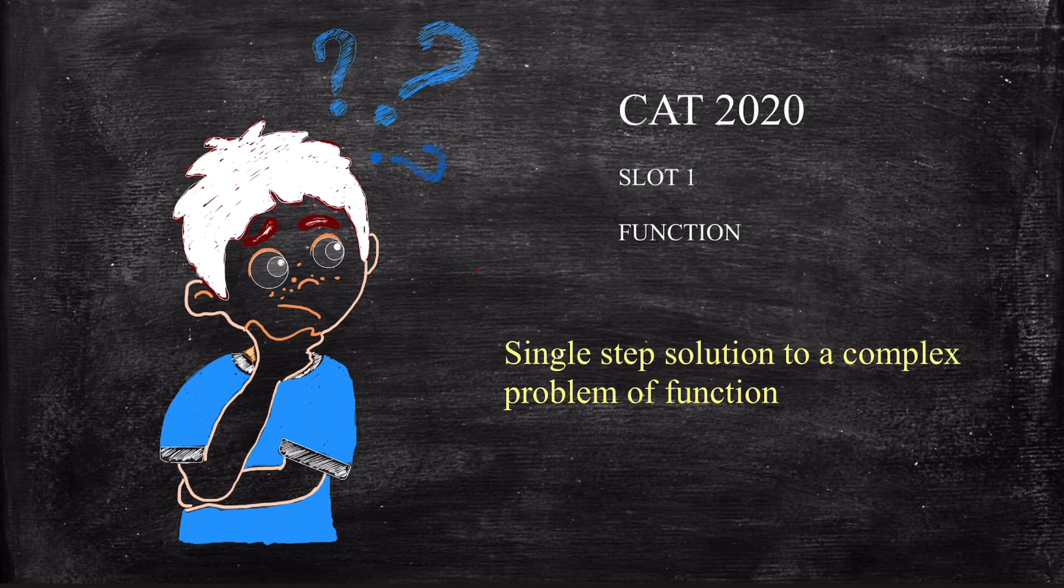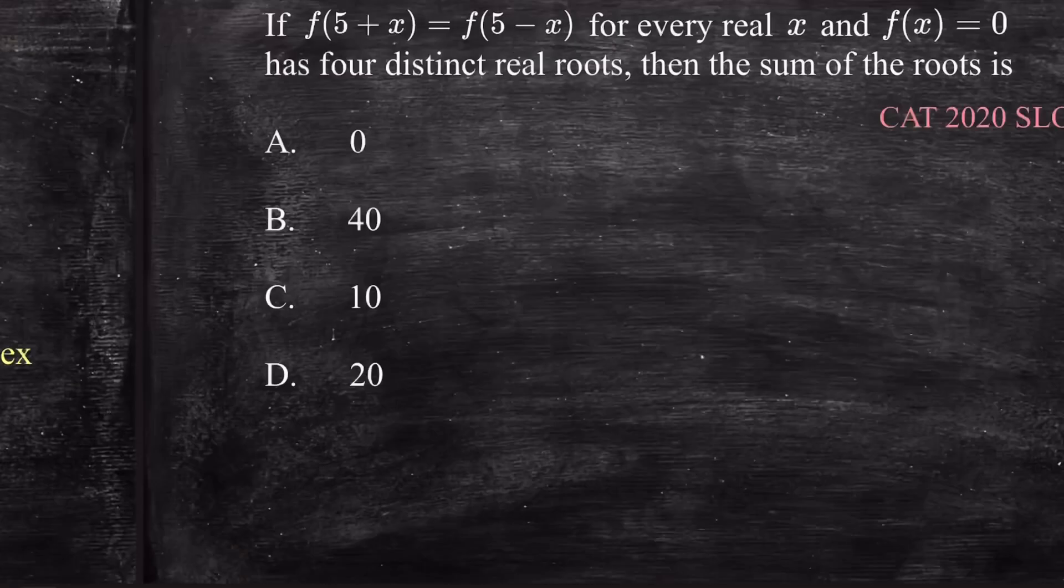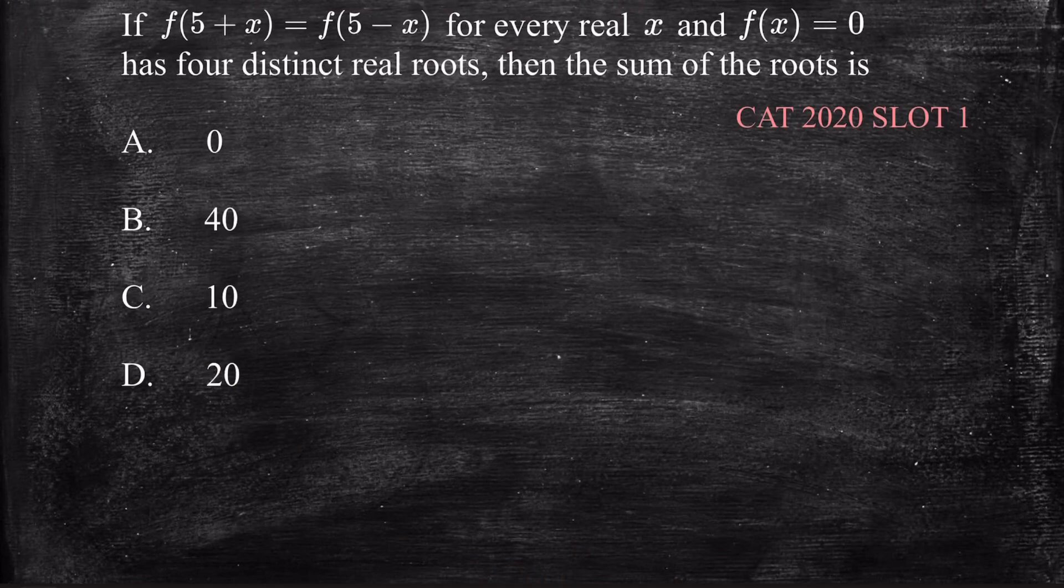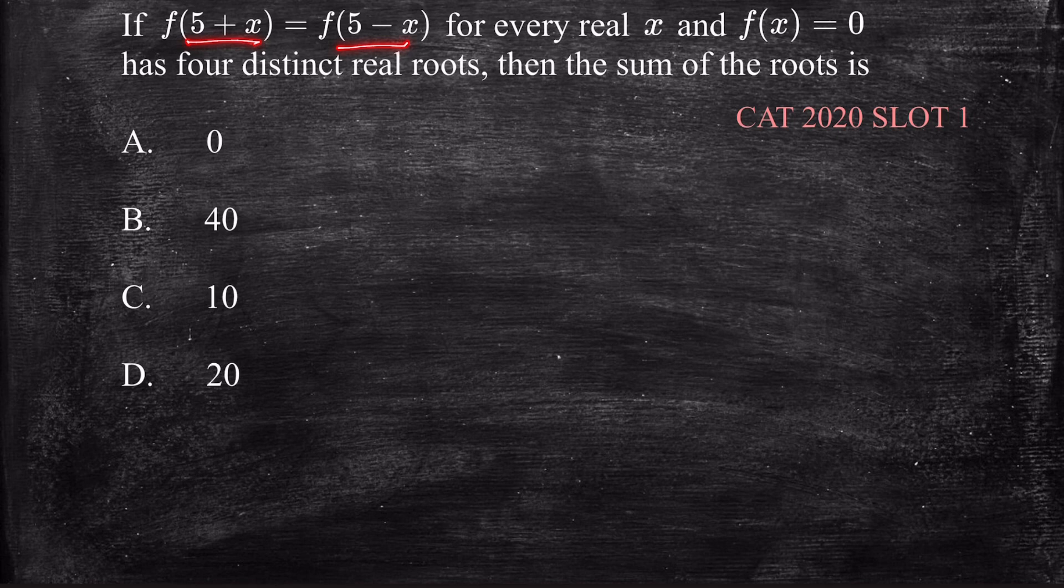But I will try to provide a single step solution to this question. So the question is: if f(5 + x) is equal to f(5 - x) for every real x and f(x) = 0 has four distinct real roots, then the sum of the roots is.